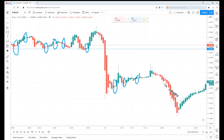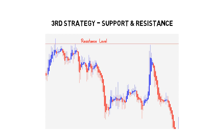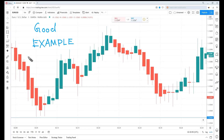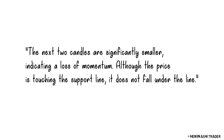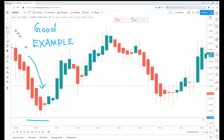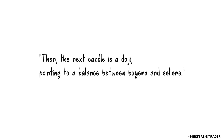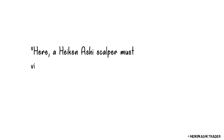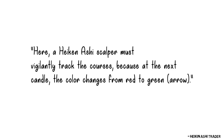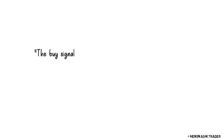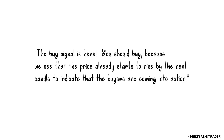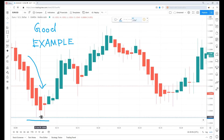I've skipped some of his strategies which are a bit unclear, where there are no clear tools to support his work. The next strategy is Heikin Ashi with technical analysis support and resistance lines. Here's a good example: the next two candles are significantly smaller, indicating a loss of momentum. Although the price is touching the support line, it does not fall below it. Then the next candle is a doji, pointing to a balance between buyers and sellers. Here a Heikin Ashi scalper must closely track the cross, because at the next candle the colour changes from red to green — that is the buy signal. You should buy, because the price already started to rise, indicating buyers are coming into action.